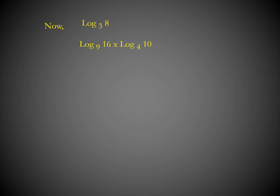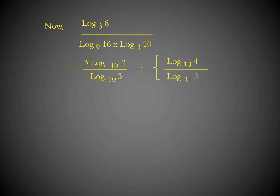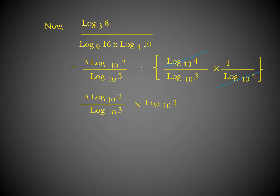Combining all parts, the full expression becomes (3 log 2 base 10 / log 3 base 10) divided by (log 4 base 10 / log 3 base 10) multiplied by (1 / log 4 base 10). The log 4 terms cancel. When division becomes multiplication we take the reciprocal, so log 3 base 10 from the denominator comes to the numerator and cancels. The final answer is 3 log 2 to the base 10.